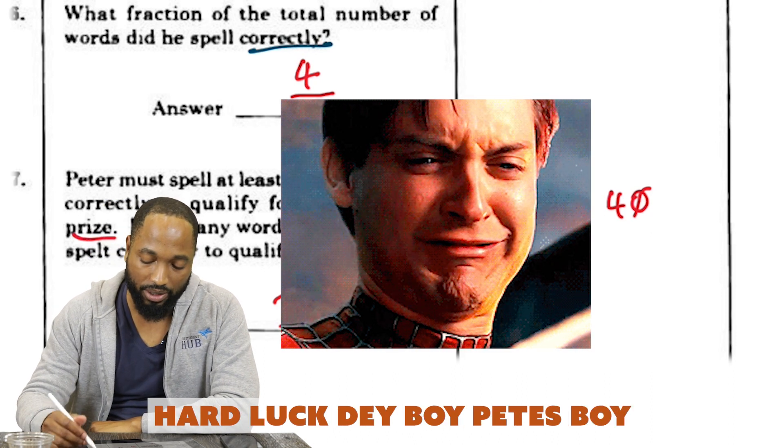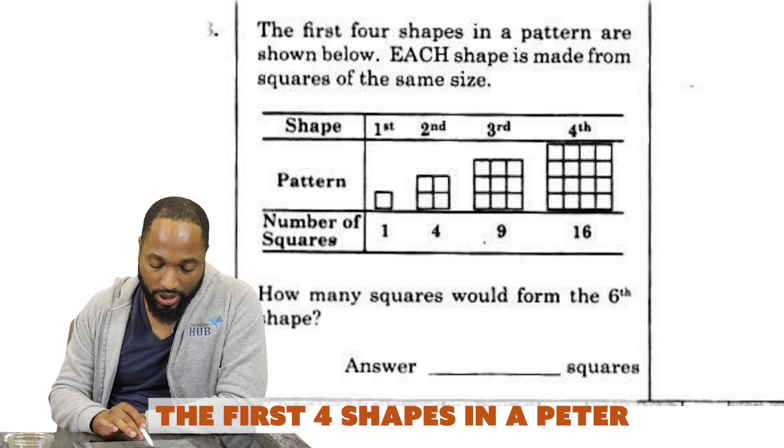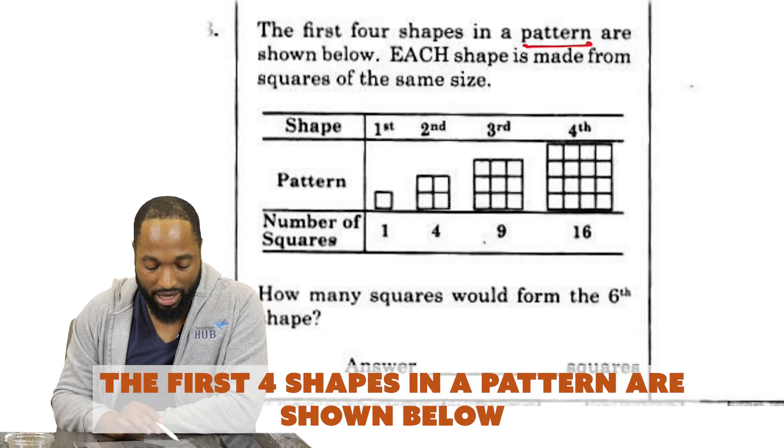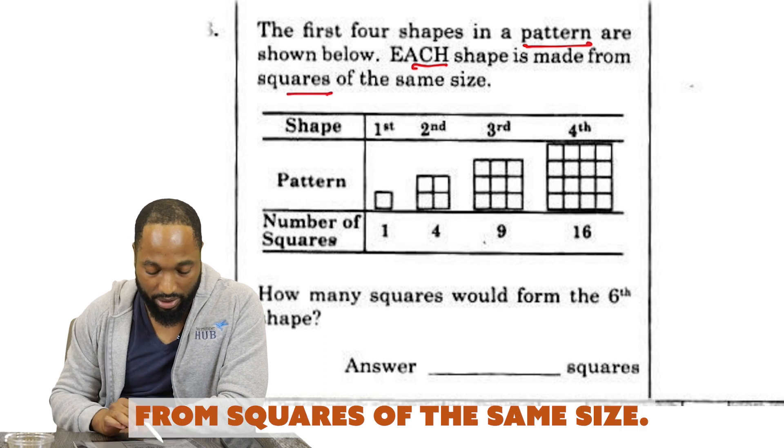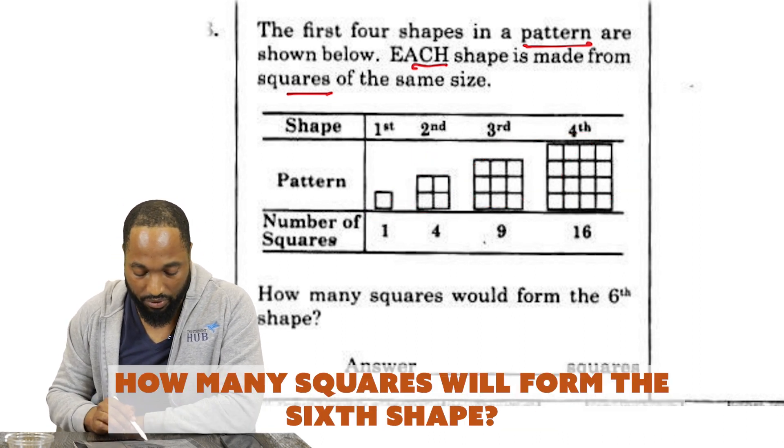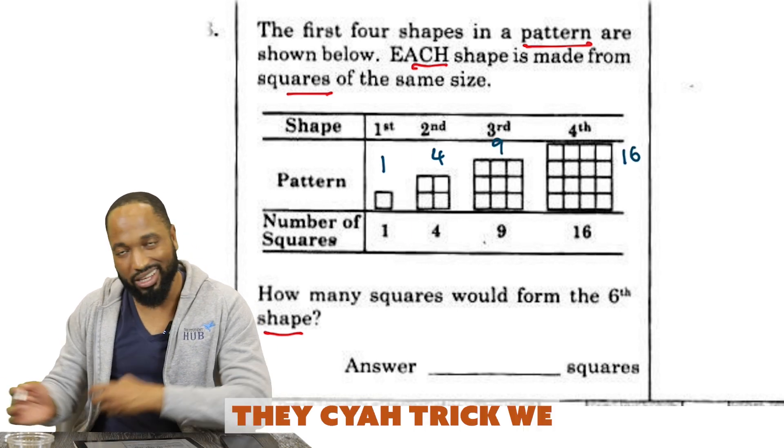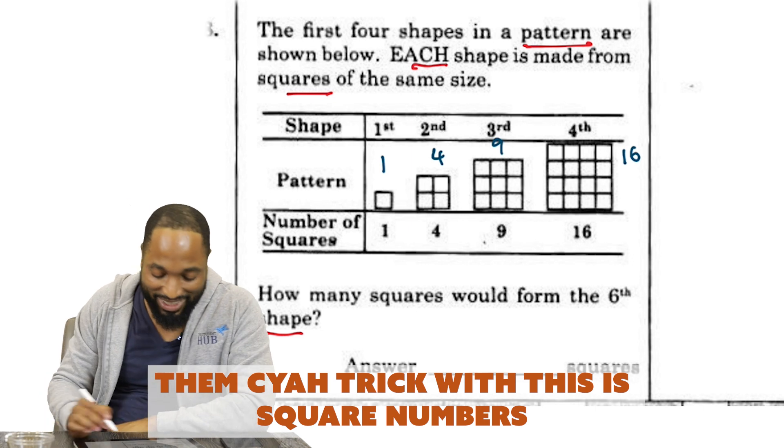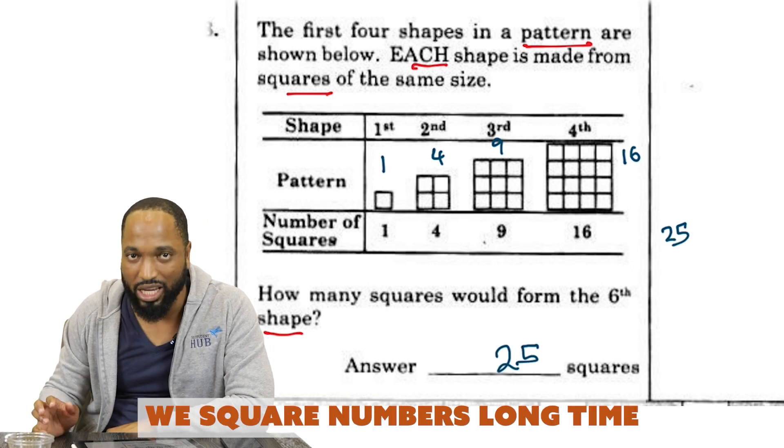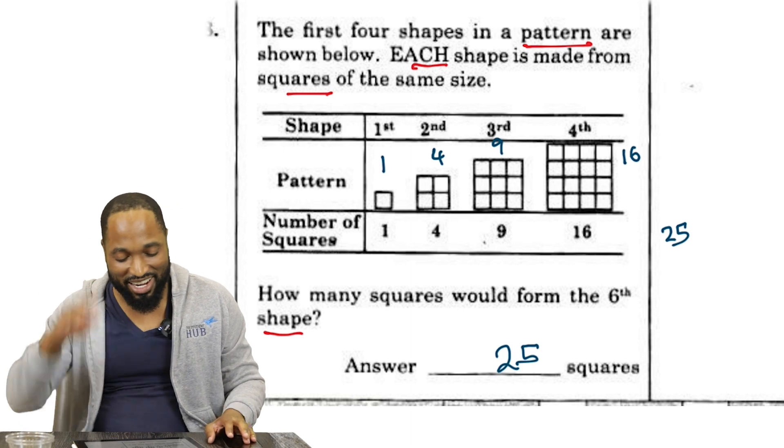Last question. The first four shapes in a pattern are shown below. Each shape is made from squares of the same size. We have like a sequence of patterns taking place here. How many squares will form the sixth shape? Well, it's square numbers. This is square numbers: 1, 4, 9, 16. So who's next? It's going to be 25, because we know square numbers. We know square numbers up to how much? 12, 15, 20, 25.